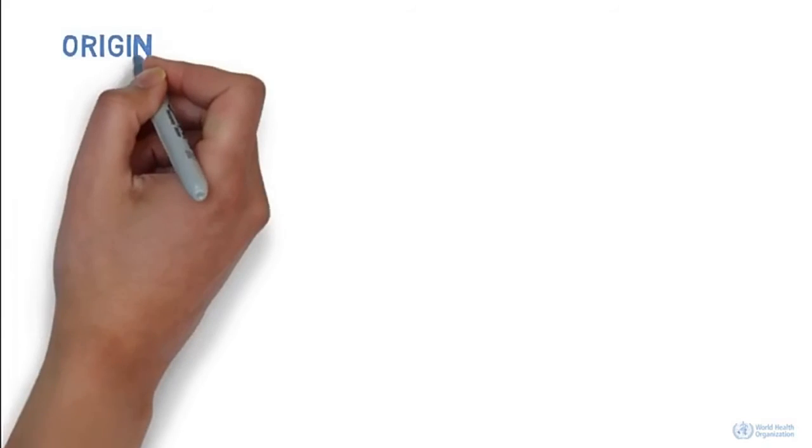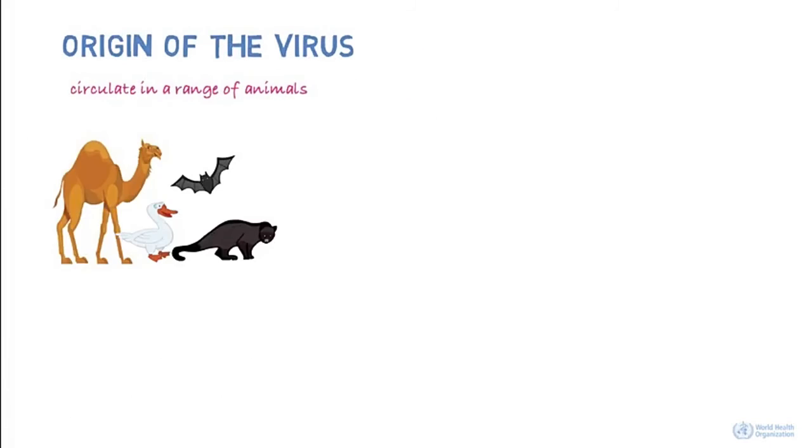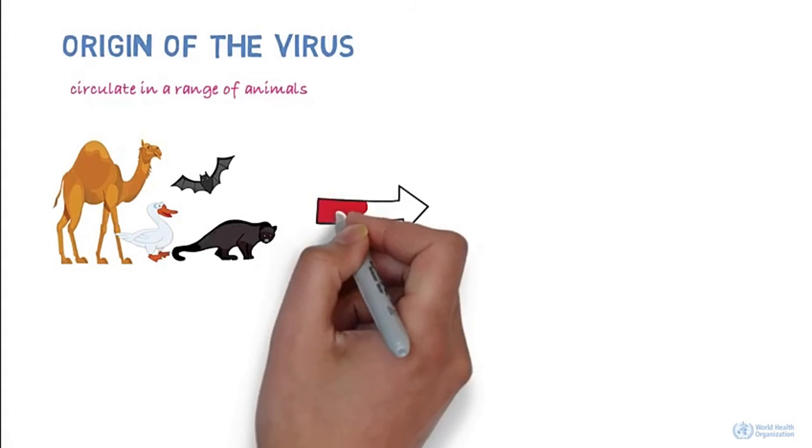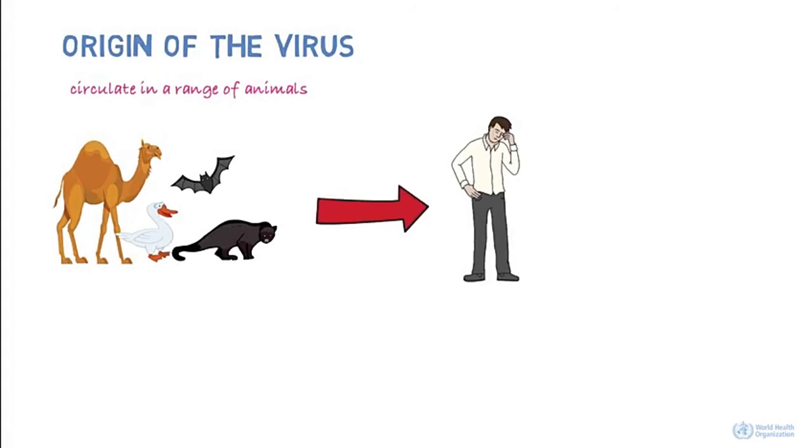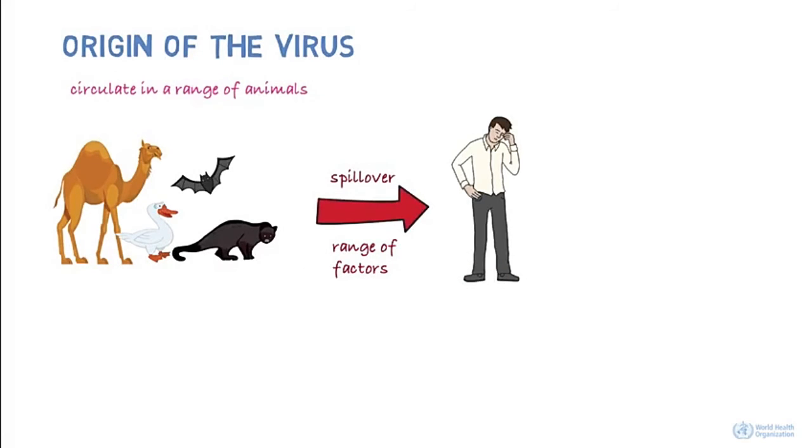Where did the virus come from? It's known that coronaviruses circulate in a range of animals. Sometimes, these viruses can make the jump from animals to humans. This is called a spillover, and could be due to a range of factors, such as mutations in the virus or increased contact between humans and animals.